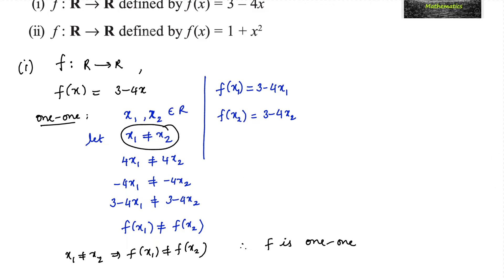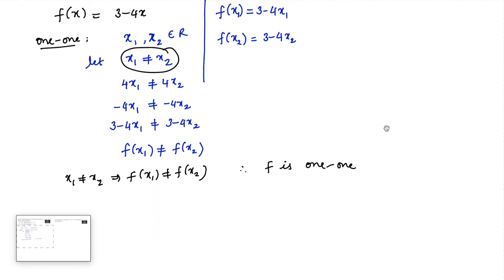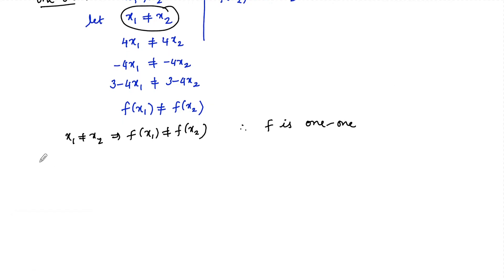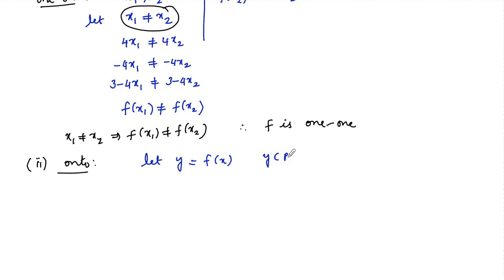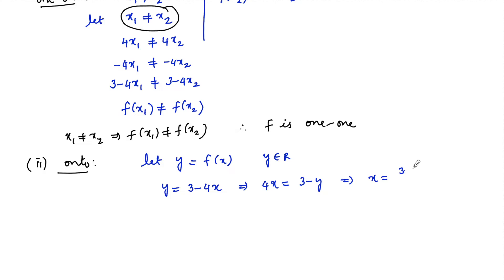Now let us check for onto. Let y be a real number and y = f(x). So y = 3 minus 4x, which implies 4x = 3 minus y, and therefore x = (3 minus y) divided by 4.